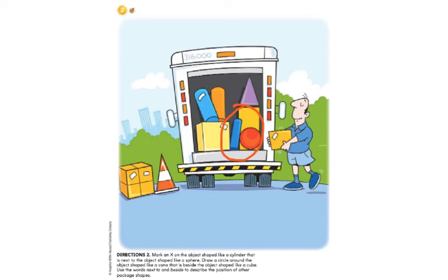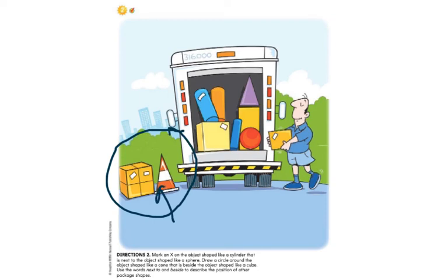Here's your next clue: point to the object shaped like a cone that is beside the object shaped like a cube. You're looking for a cone that is beside a cube. I'm going to give you 10 seconds to find it. The cone that is beside the cube is this one right here — here's your cone beside your cube. Beside the cone is the cube. Is that the one you chose? Great job.